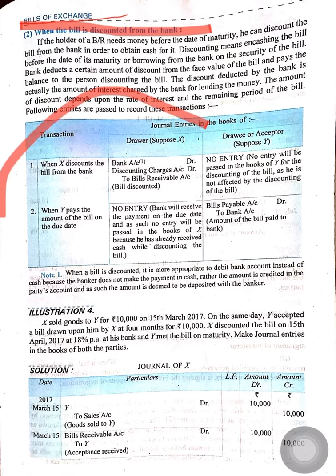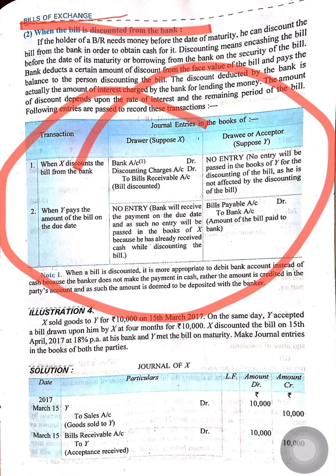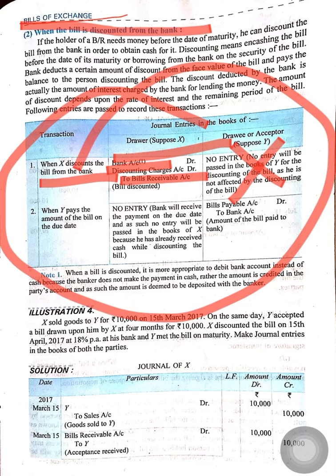Here is the general entry regarding that. When X discounts the bill from the bank: Bank Account debit, Discount Account debit, to Bills Receivable. No entry will be passed in Y's books because it will not affect Y.